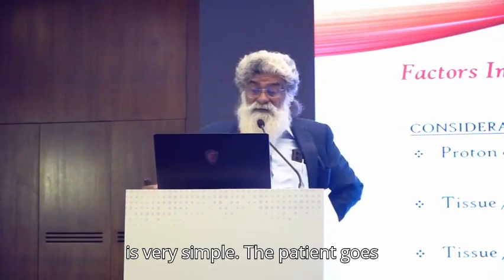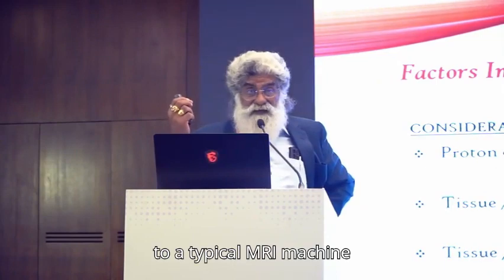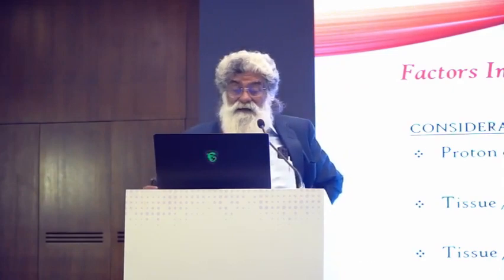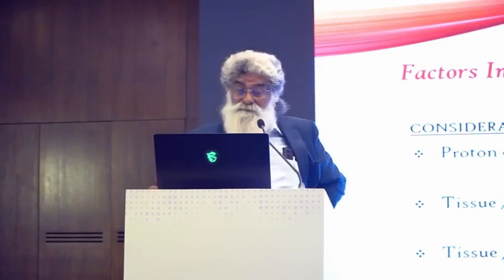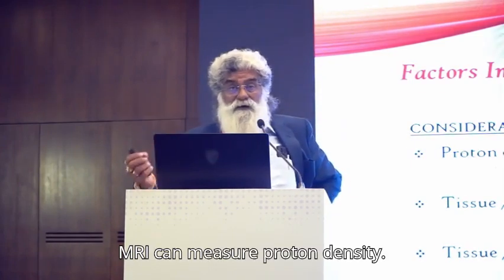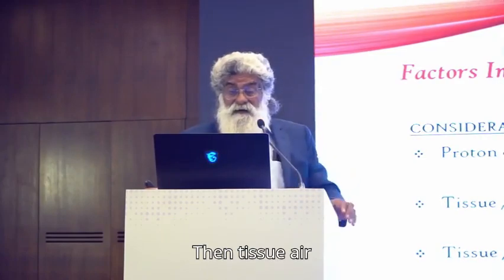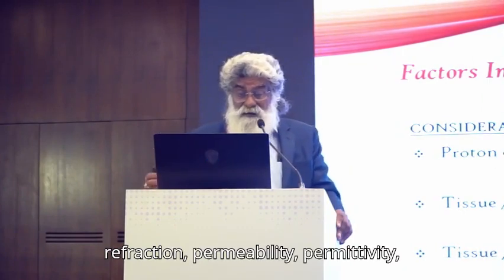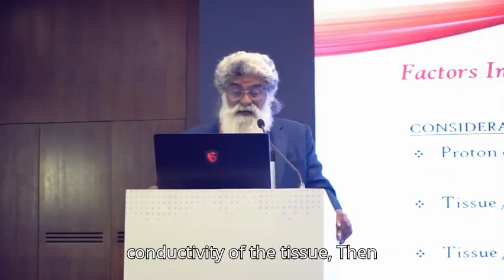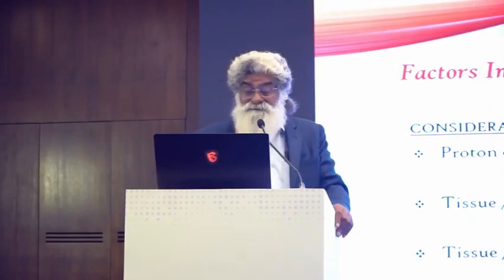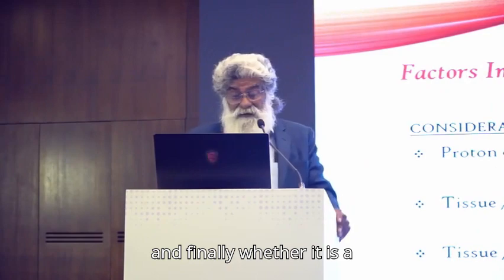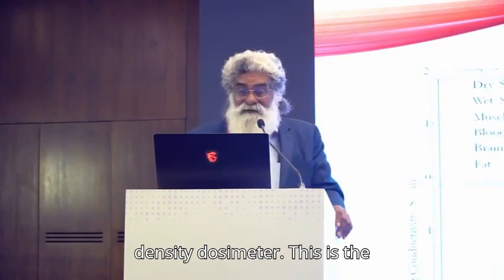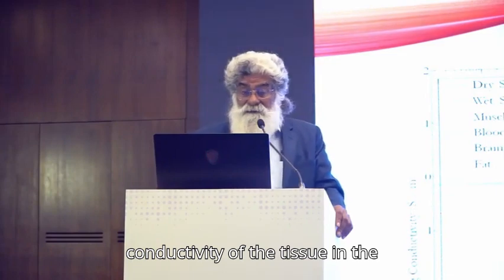How do we start? First, it is very simple. The patient goes to a typical MRI machine, and in the MRI machine, you obtain a proton density of the tissue — MRI can measure proton density. Then you measure tissue air refraction, permeability, permittivity, and conductivity of the tissue. Then you determine the target and the focus, and whether it is a fixed or variable density close to the tumor.